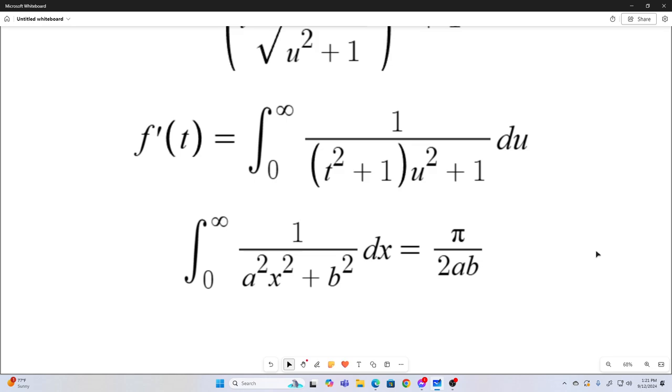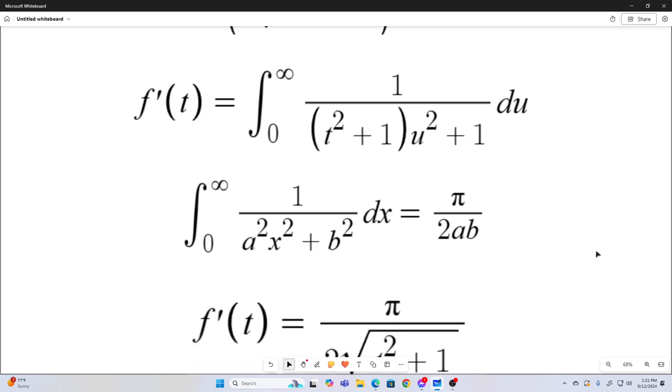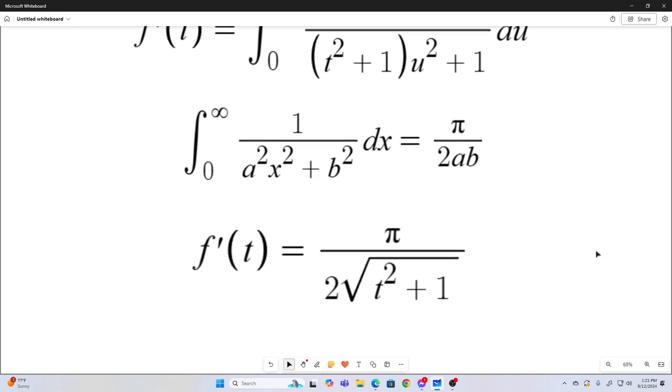And our a squared is t squared plus 1, meaning our a is the square root of t squared plus 1. And our b squared is 1, meaning our b is 1. So our f prime of t just, it simplifies to this.